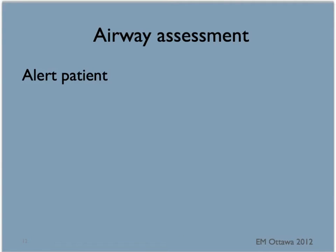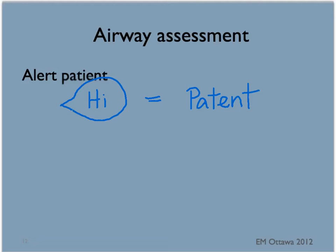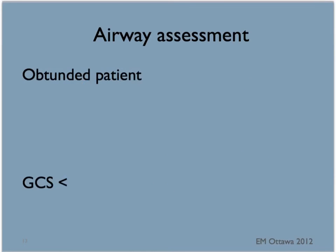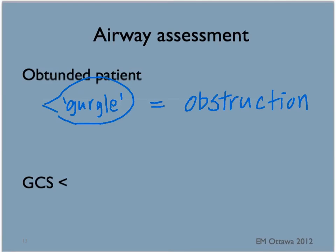How do we assess for airway patency? We listen and watch. In an alert patient, if the patient is able to talk to you, they have a patent airway. If the patient is not able to speak or is only making gurgling noises, the airway is obstructed — something is blocking airflow from the oral pharynx to the trachea. If you hear noisy breathing, there is an airway obstruction. As a general rule, a Glasgow Coma Scale of less than 8 usually signifies the need for an airway intervention.